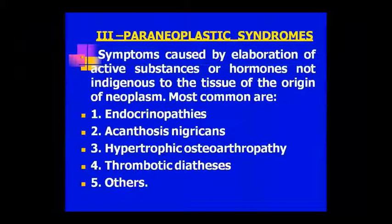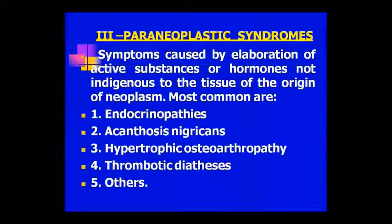This is called paraneoplastic syndrome. It is called endocrinopathy. Types include endocrinopathy, acanthosis nigricans, hypertrophic osteoarthropathy — this osteoarthropathy is OA, which is studied in bones — thrombotic diathesis, and other diseases.